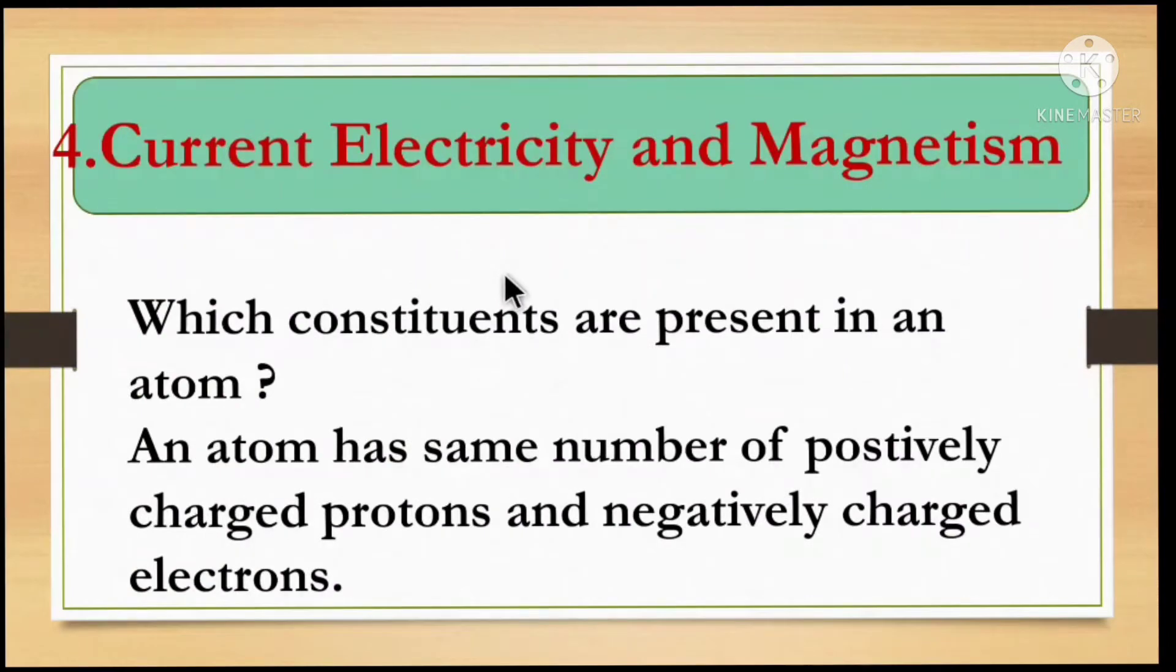Which constituents are present in an atom? Proton, neutron, and electron. Protons have positive charges, electrons have negative charges, and neutrons have no charge. An atom has the same number of positively charged protons and negatively charged electrons.